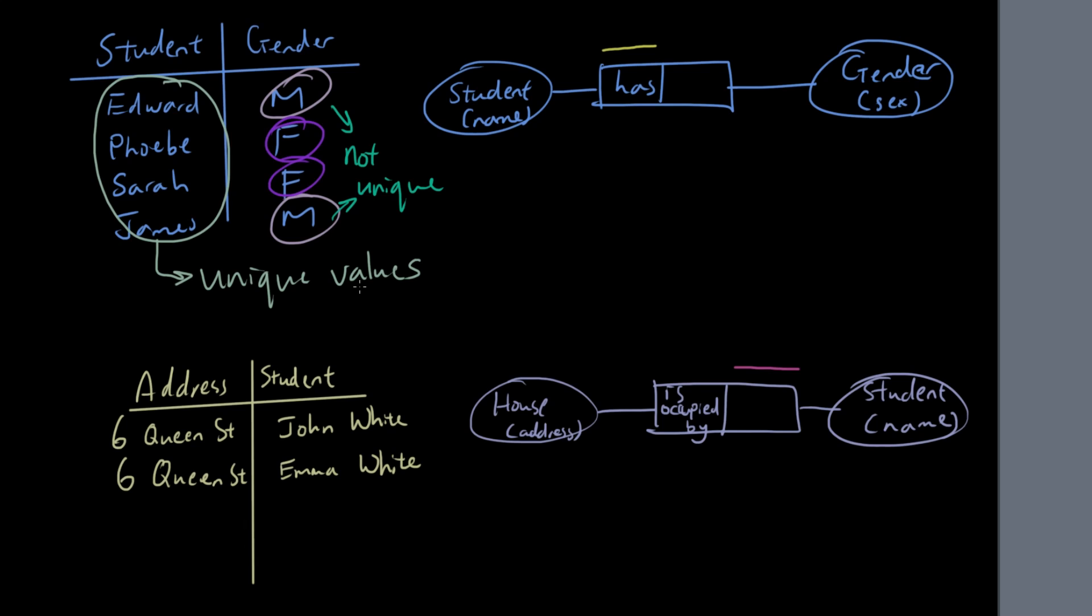Now we also have names for these types of relationships, and the first one is where we call many to one. Many to one relationship, and the reason why this is many to one is if you represent this table using a mapping diagram, so if you draw some circles and some arrows, you would see that Edward, Phoebe, Sarah, James, there are four different things on the left.